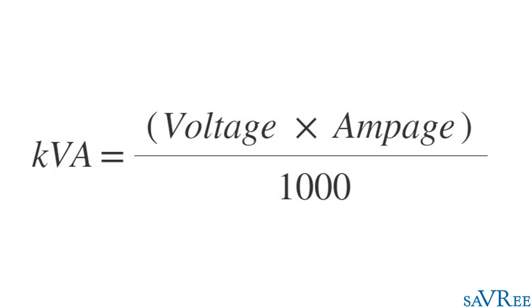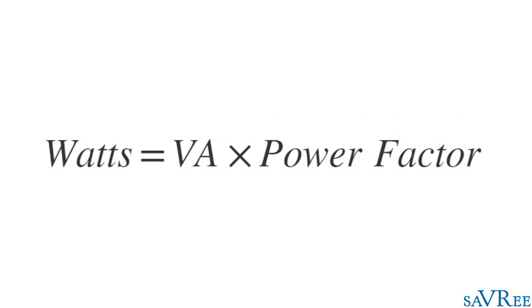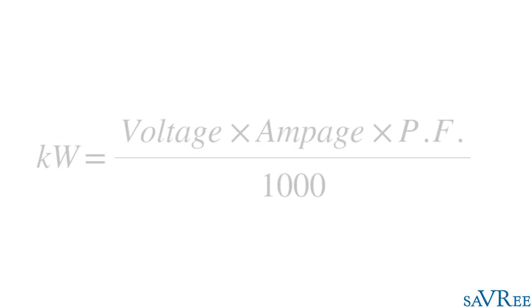Now, let's have a look at how we calculate watts. Watts equals voltage ampere multiplied by the power factor. If we're looking at kilowatts, then this is voltage ampere multiplied by the power factor divided by 1,000.